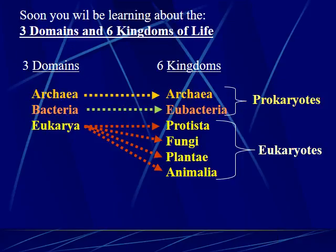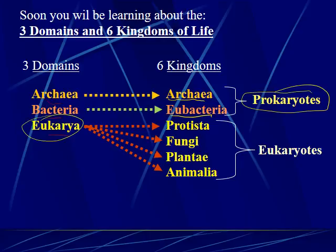You're responsible for learning and remembering the three domains. You have the Archaea, the Bacteria, and the Eukarya. For a long time scientists considered archaea and bacteria the same thing, but they found actual differences and divided them into two domains. Each of those two domains has only one kingdom: Archaea has the kingdom Archaea, and Bacteria has the kingdom Eubacteria. Both are prokaryotes — simple bacterial cells with no nucleuses, no endoplasmic reticulums. The domain Eukarya has four kingdoms: Protista, Fungi, Plants, and Animals.